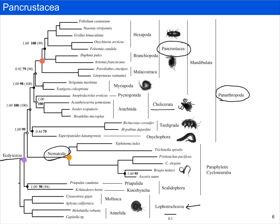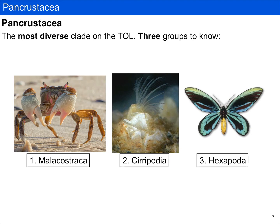Notice that in pancrustacea, two groups should stand out to you: the hexapods and the malacostracans. We don't really talk about branchiopods in this course, but we do spend a lot of time talking about hexapods or insects and malacostracans, which includes things like crabs, shrimp, lobsters, etc. There are three groups we're going to briefly discuss: the malacostracans or crabs, lobsters, and shrimps; the cirripedes or barnacles; and of course the hexapods.